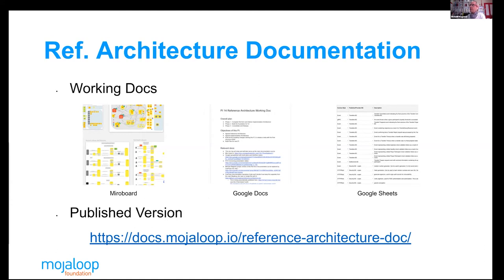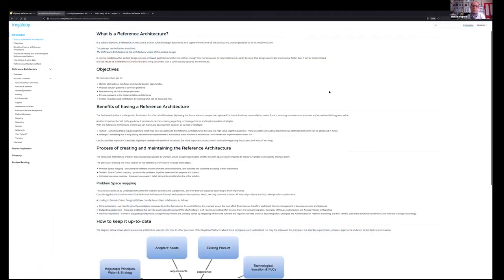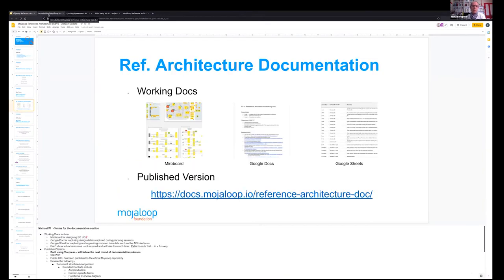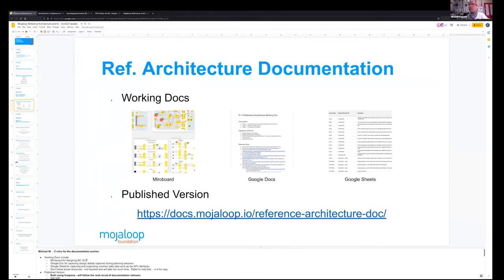I want to take you through the beginnings of our published document. We're using VuePress, and the reason we decided to use VuePress for the published documentation is because we wanted to align with the next release of documentation for MojoLoop, which is going to be released soon. So we've used VuePress.